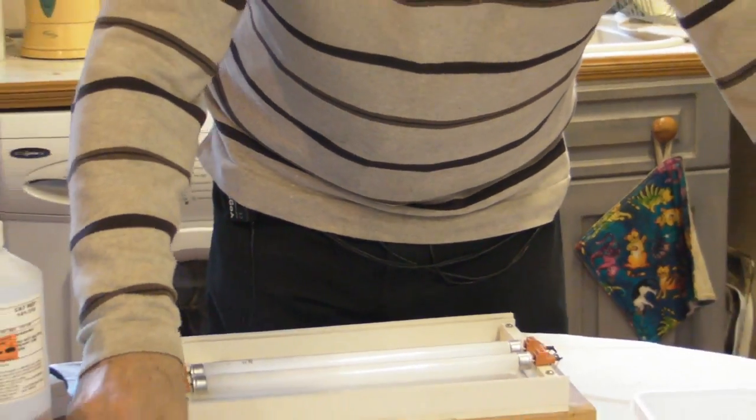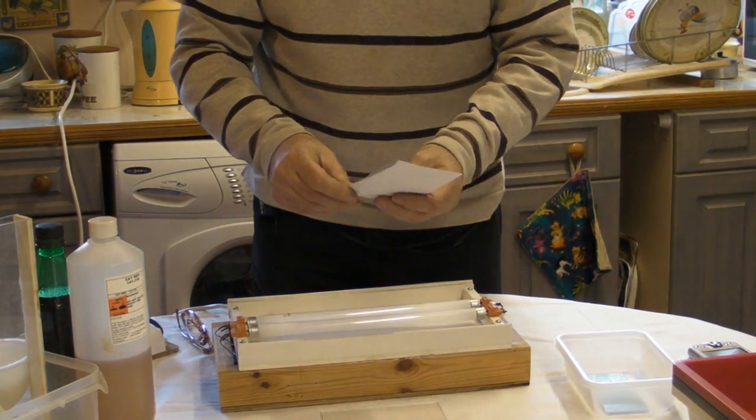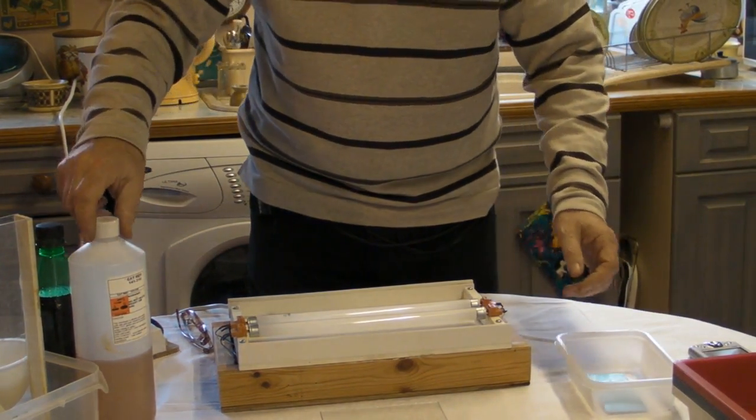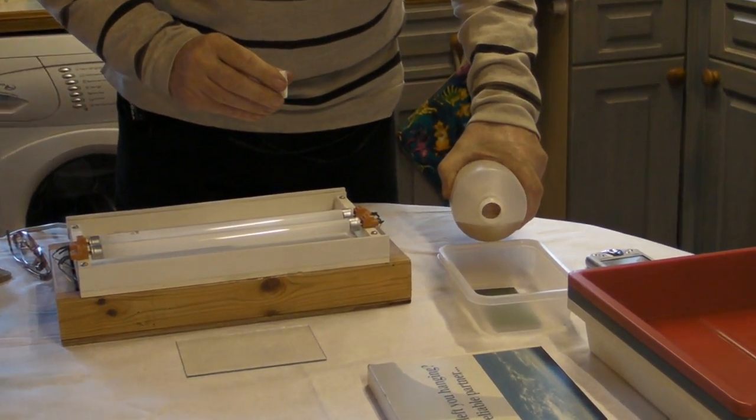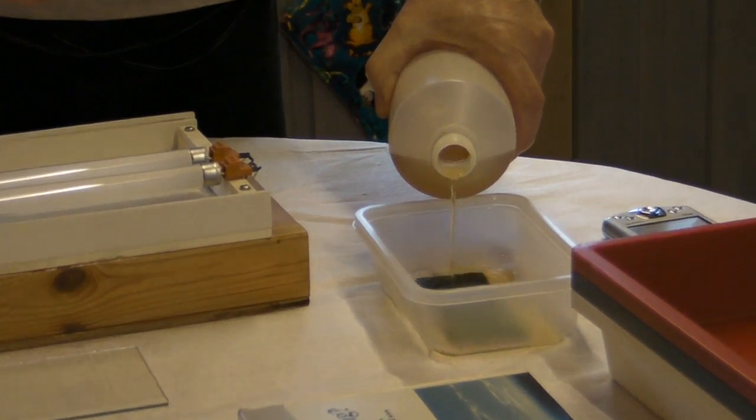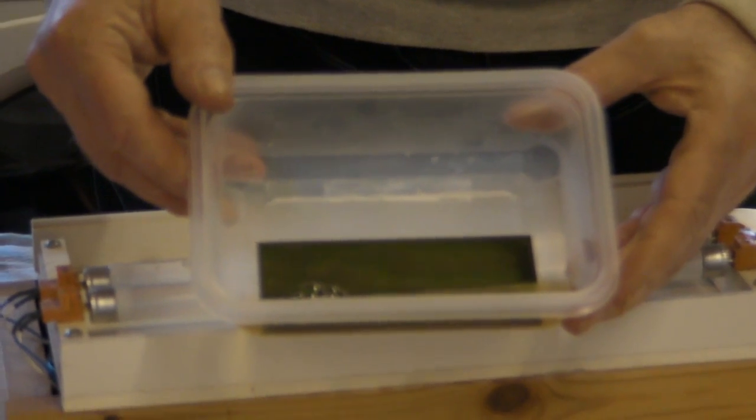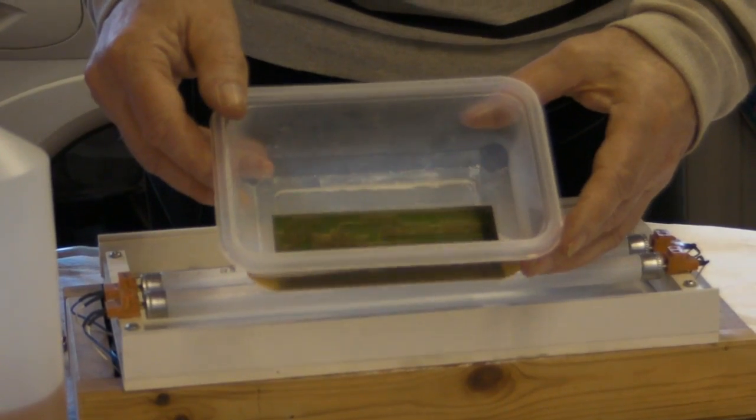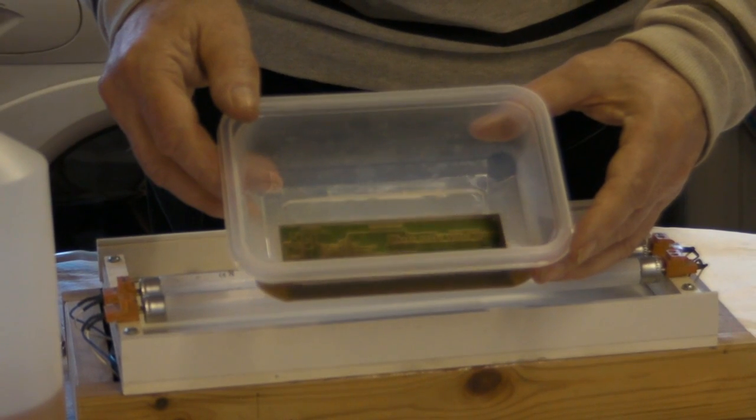So it's as well to keep the negative safe from dirt and everything else. So if we now pour the developer over the printed circuit board, you might be able to see very quickly, you can see the outline of the tracks. And the excess resist is then washed off with the developer.